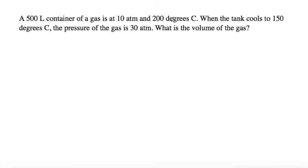So let's start by looking at the first sentence. The first sentence tells us that a gas is 500 liters when it's also at 10 atmospheres and 200 degrees C. That would be all in the first condition. This is all happening at the same time.